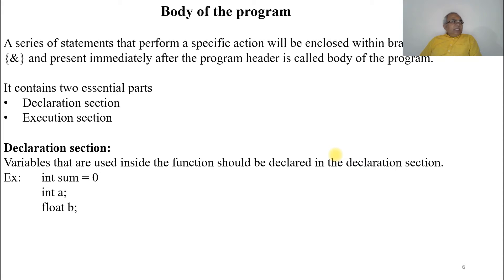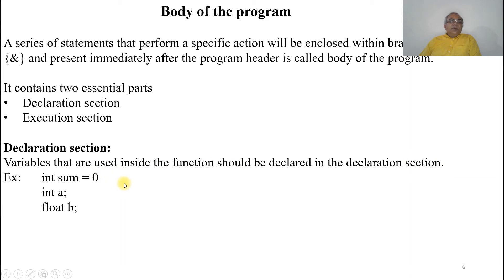The body contains two essential parts: the declaration section and the execution section. In the declaration section, variables that are used inside the function should be declared. For example, if you want to perform the addition of two numbers, you would need variables for the two input numbers and the sum.